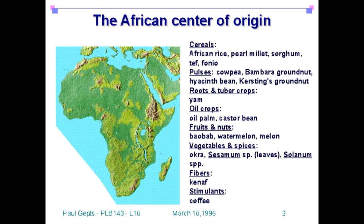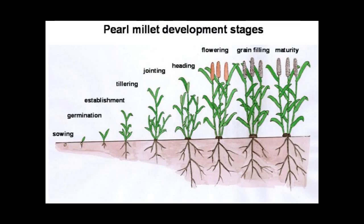The origin of pearl millet is Africa. Pearl millet developmental stages are: Sowing, Germination, Establishment, Tillering, Jointing, Heading, Flowering, Grain Filling, and Maturity.